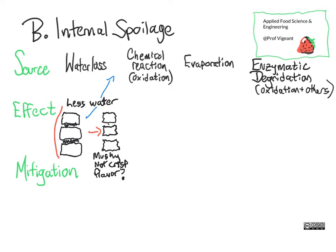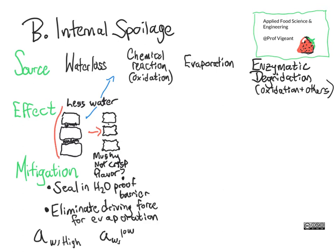So how can we mitigate this? Mitigation is pretty much what you'd expect. If you coat your fruit in something that water can't get through — say you take your apple and completely cover it with wax, which is a hydrophobic, nonpolar compound that water doesn't like to dissolve in — you can seal it and keep the water from getting out.